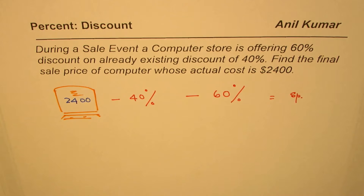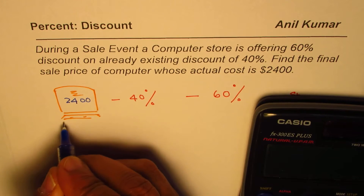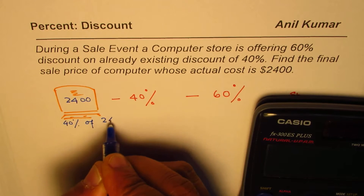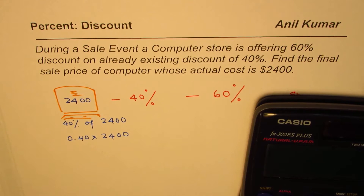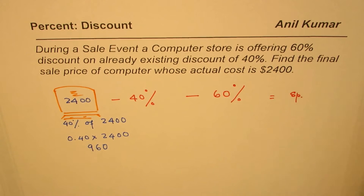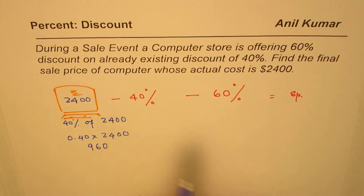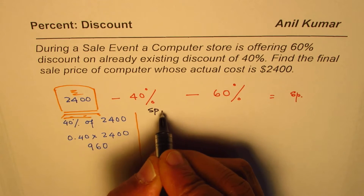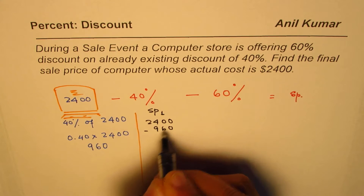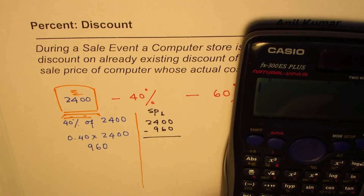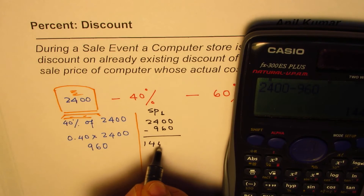Now, 40% of 2400 is how much? Let's find that. 40% of 2400 is 0.40 times 2400, and that is 960. So once you apply that discount, the selling price 1 — that is after 40% discount — should be 2400 take away 960.